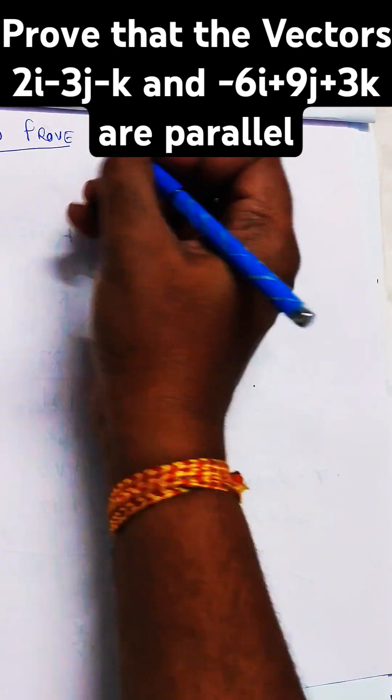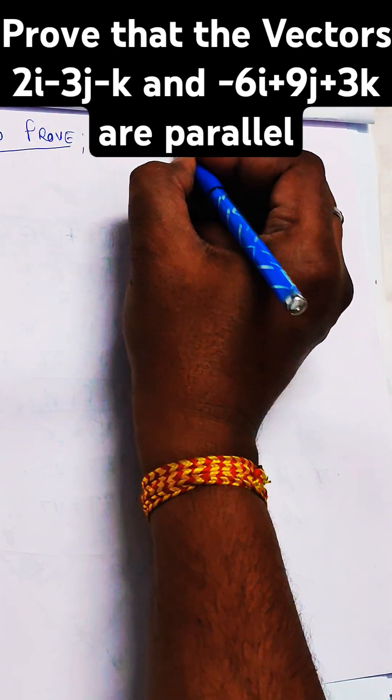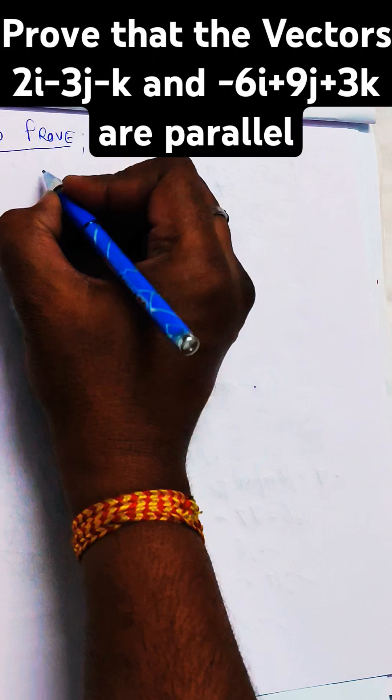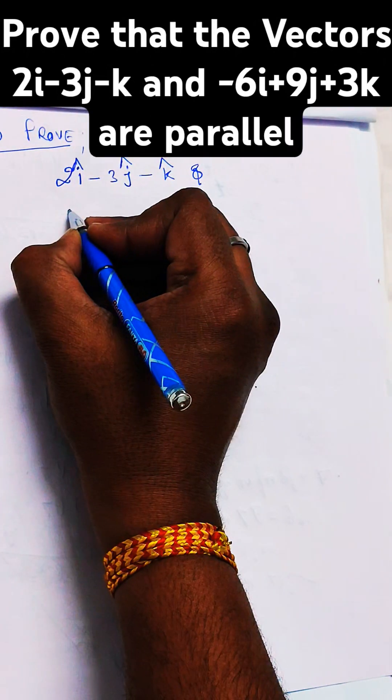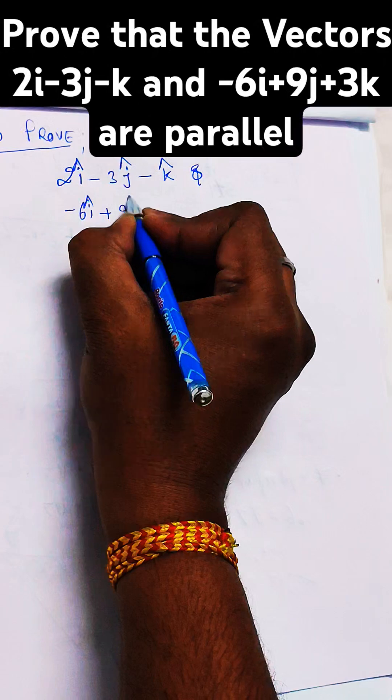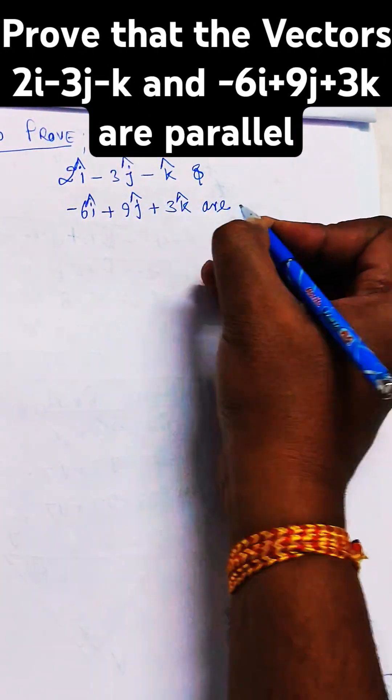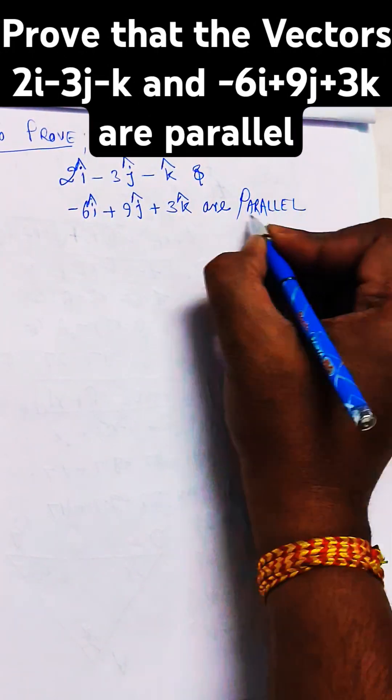Two vectors are given. We need to prove that these vectors are parallel to each other. The two vectors are 2i minus 3j minus k, and the other vector is minus 6i plus 9j plus 3k, and these vectors are parallel.